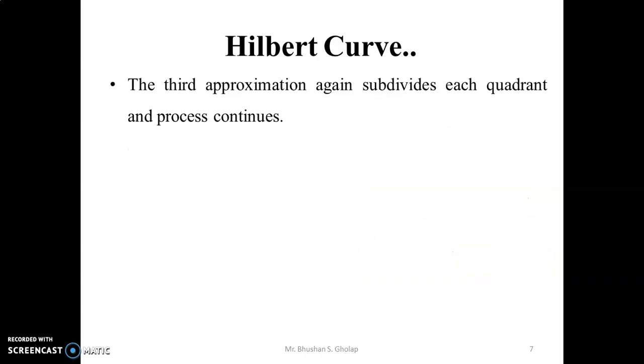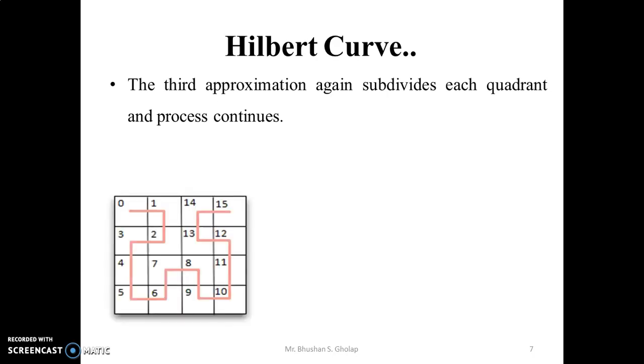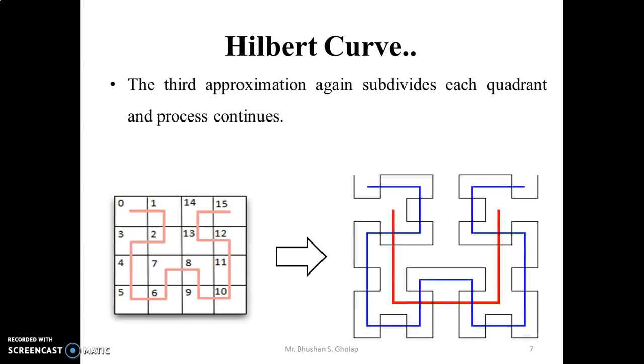The third approximation again subdivides each quadrant of the square and the process continues. This is the second approximation. And this diagram shows us the Hilbert curves, first to third order. In red color, this shows us the first order, this is the second order, and this is the third order.